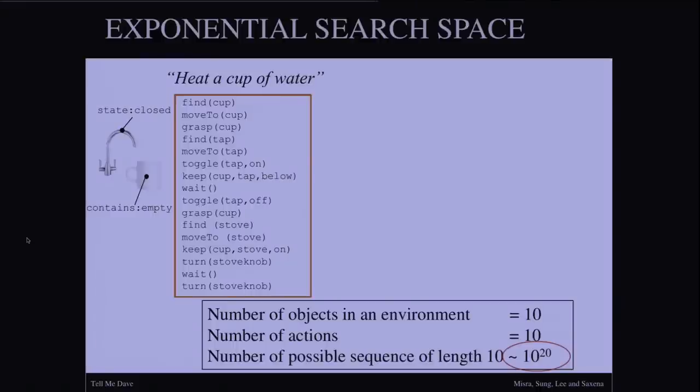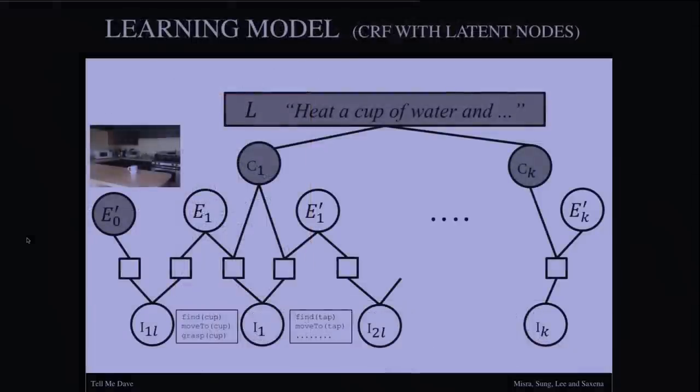Even if you make a weak assumption that there are only ten objects in the environment, and only ten action primitives, the number of possible sequences of length 10 could be of the order of 10 to the power 20, which is fairly big, even if you do some kind of trimming. Thus, what we need is an effective inference algorithm.